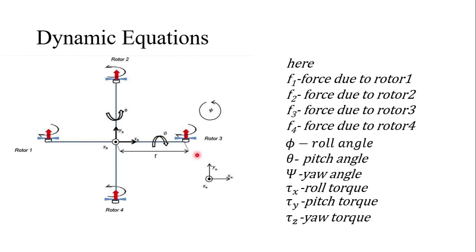Yaw motion is the rotation of the quadcopter about the z axis and is achieved by varying the relative RPM of the clockwise and counterclockwise rotating propellers. If the RPM of the clockwise rotating propellers is greater than that of the counterclockwise rotating propellers, then the resultant torque is clockwise and the reactive torque is counterclockwise. By reversing this, the quadcopter rotates in the opposite direction, thereby achieving yaw motion. Our objective is to obtain equations for tau_x, tau_y, and tau_z.